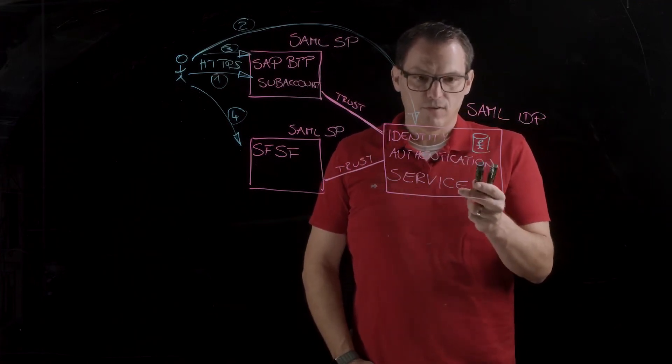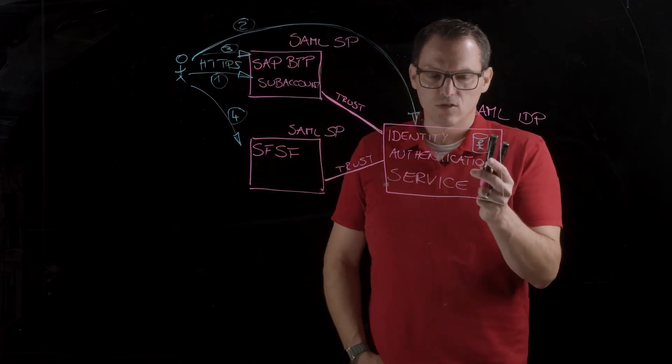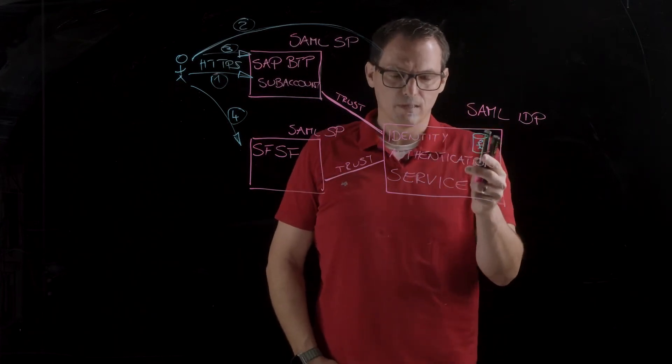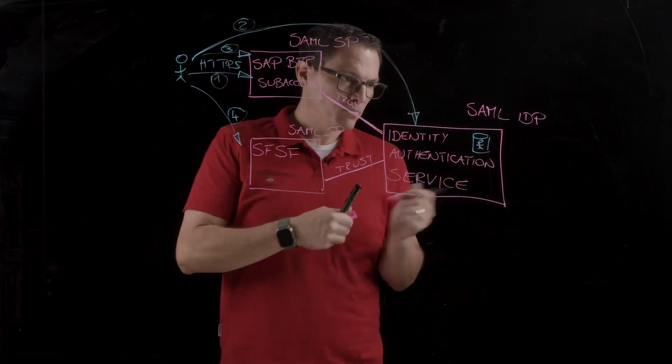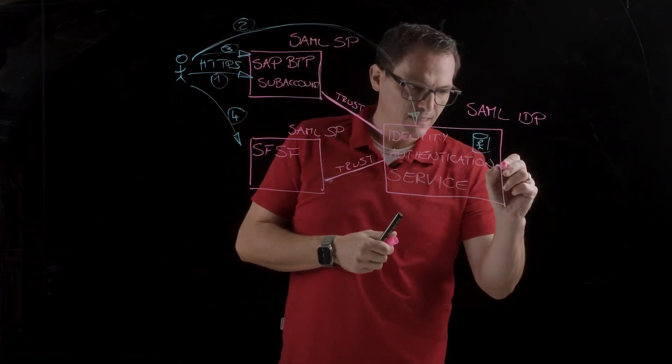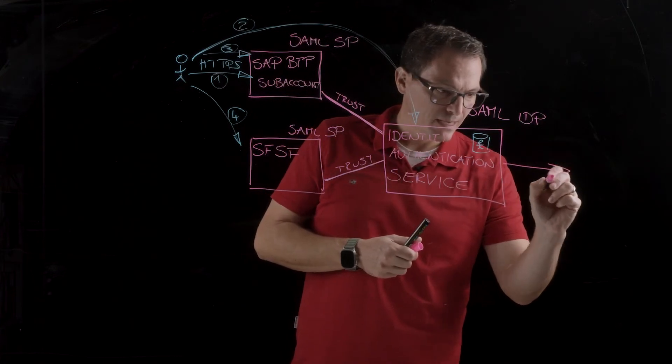The identity authentication service, on the other hand, can not only store the users in the service itself, but it can also act as a proxy. So, with the IAS, you can also access, for instance, another SAML identity provider, like, for instance, Azure Active Directory.